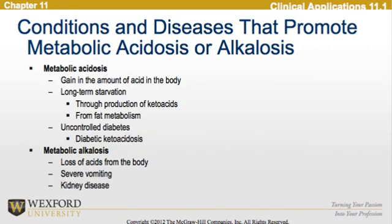Looking at the conditions and diseases that promote metabolic acidosis or alkalosis: in metabolic acidosis, there is a gain in the amount of acid in the body. This can result from long-term starvation through the production of ketoacids or from fat metabolism. We also see this in uncontrolled diabetes, resulting in diabetic ketoacidosis. During metabolic alkalosis, we see the loss of acids from the body, which can result from severe vomiting or kidney disease.